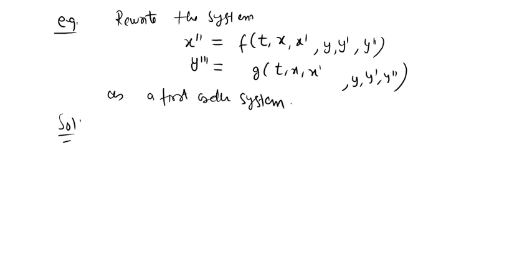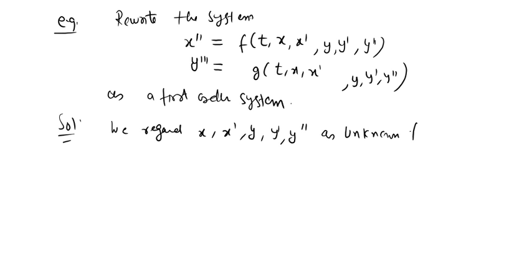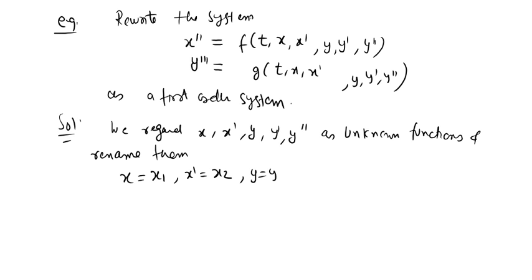To convert to a first-order system, we regard x, x', y, y', y'' as unknown functions and rename them. Let x = x1, x' = x2, y = y1, y' = y2, and y'' = y3. These are the unknowns: x1, x2, y1, y2, y3, and they satisfy a new first-order system.